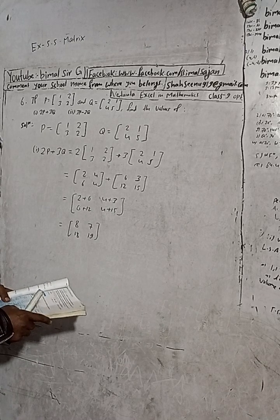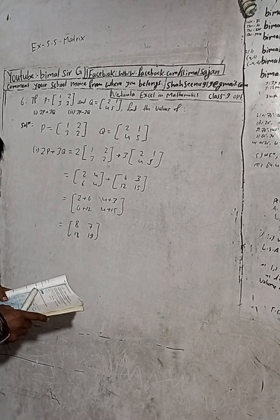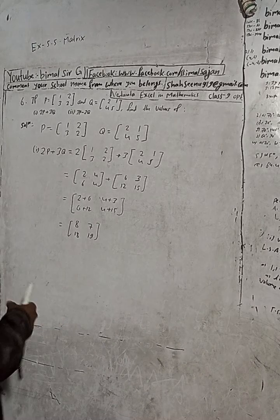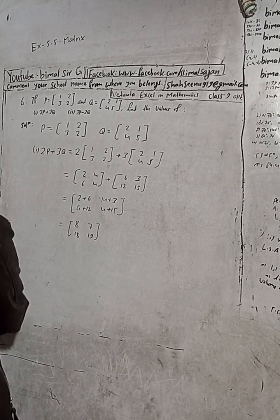So this is the required answer of number one. Let me check the answer in the book — yes, we find [8 7; 18 19]. Correct.